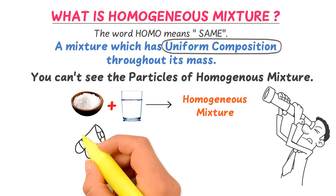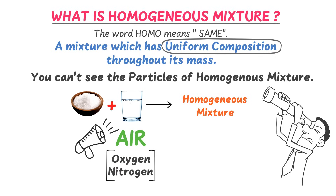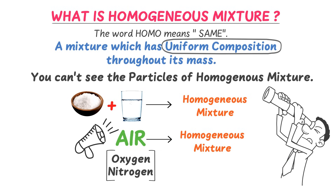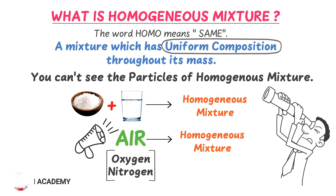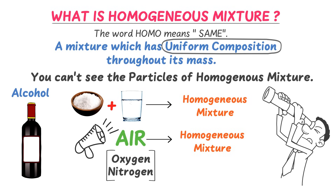The second example of homogeneous mixture is air. We know that air is made up of different gases like oxygen, nitrogen, and carbon dioxide. Air is a homogeneous mixture because all these gases are combined together physically in such a way that they form a uniform composition throughout, and we cannot see the particles of these gases. One last example of homogeneous mixture is alcohol. It also has uniform composition throughout its mass, and we therefore call it a homogeneous mixture.